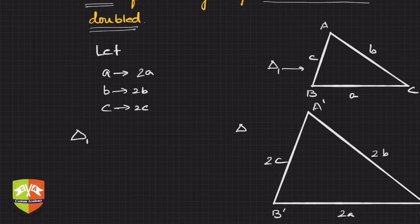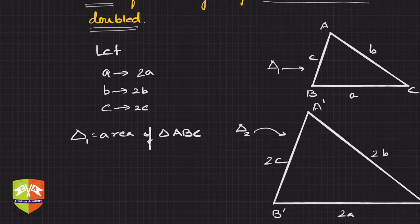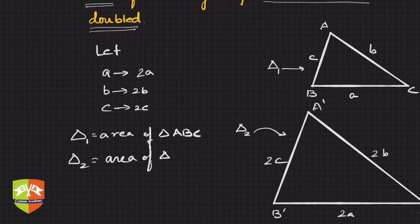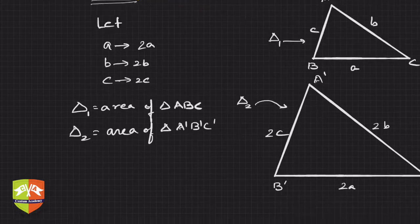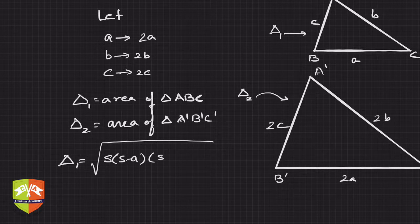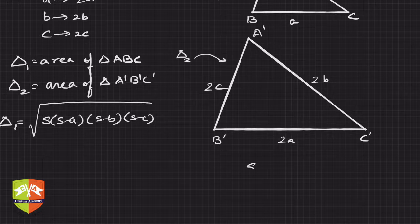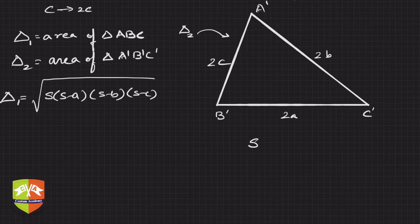Let Delta 1 be the area of triangle ABC and Delta 2 be the area of triangle A'B'C'. By Heron's formula, Delta 1 equals the square root of s(s−a)(s−b)(s−c), where s is the semi-perimeter of triangle ABC.